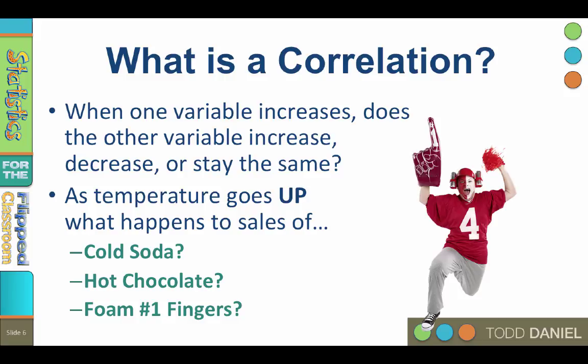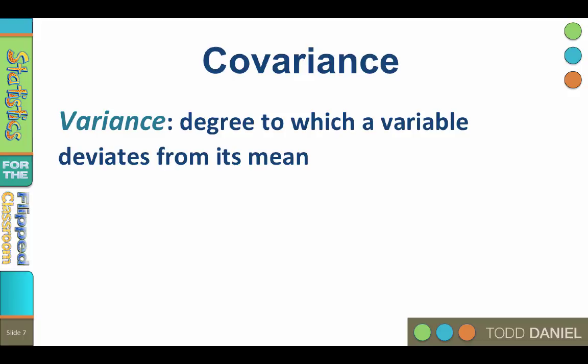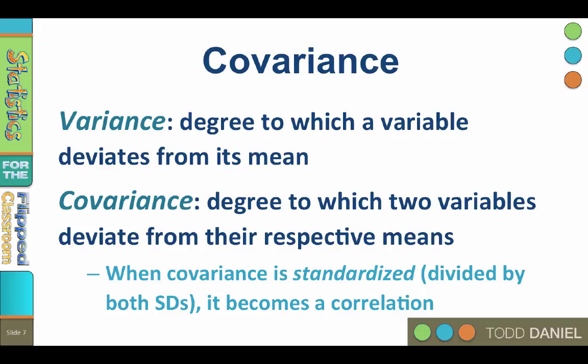Now let's talk briefly about the math behind correlation. We have learned about variance — the degree to which a variable deviates from its mean. Here is a new term: covariance. Covariance is the degree to which two variables deviate from their respective means. Covariance is how two variables vary together; they may deviate together in a similar way. If so, strong covariance. When two variables co-vary together, they are correlated. In fact, when covariance is standardized — divided by both standard deviations — it becomes a correlation.